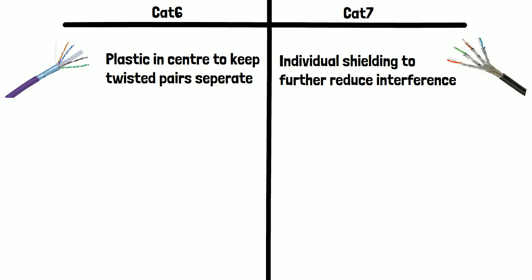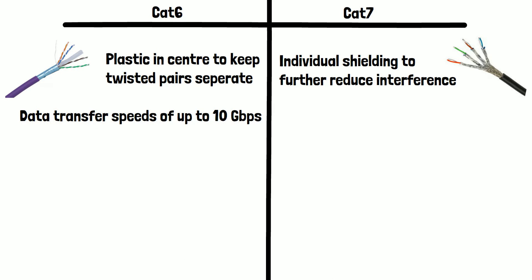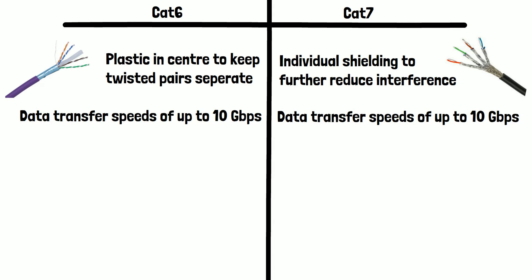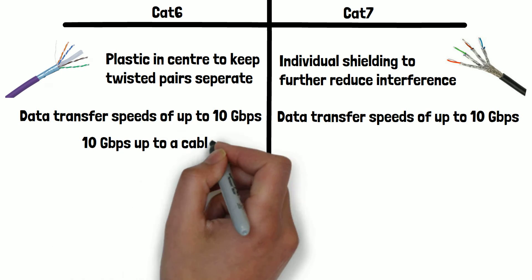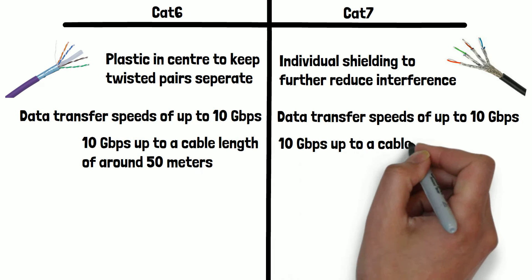Now let's look at speed. CAT6 cables support data transfer speeds of up to 10 gigabits per second, and CAT7 cables also support data transfer speeds of up to 10 gigabits per second. The difference here is the range at which they can transfer data at their max speed. CAT6 cables can transfer at the max speed of 10 gigabits per second up to a cable length of around 50 meters. CAT7, on the other hand, can be up to 100 meters long when transmitting data at 10 gigabits per second.